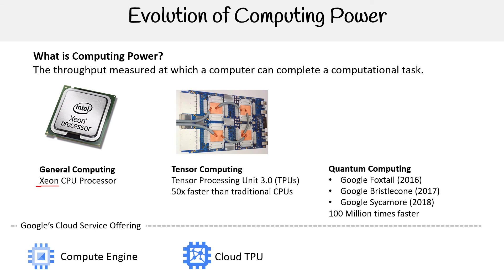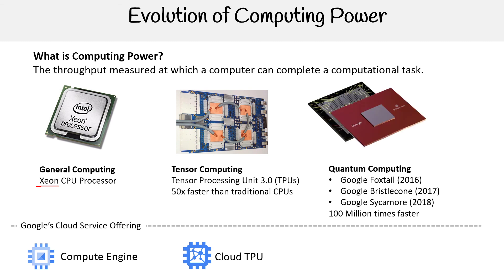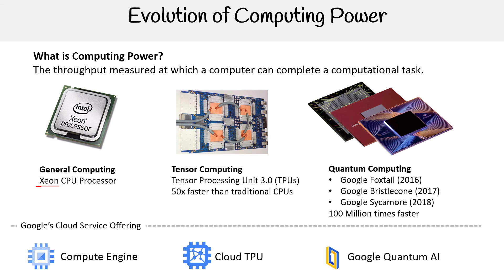Google has an offering — as does AWS — for quantum computing. In particular, Google has been producing different hardware. They first had Foxtail in 2016, then Bristol Core in 2017, and the latest one they have is Sycamore in 2018. This is all accessible via Google Quantum AI.